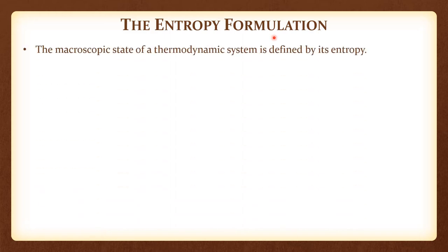As with the previous two lectures on temperature and pressure, we start with the entropy formulation. The macroscopic state of the thermodynamic system is defined by its entropy, and by however many independent variables are needed per the state postulate. We look at three independent variables: internal energy corresponding to heat interactions, and two work modes — one corresponding to a moving boundary and another corresponding to a permeable or impermeable boundary, which is the work mode of interest in this lecture.